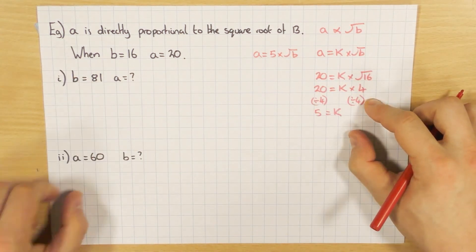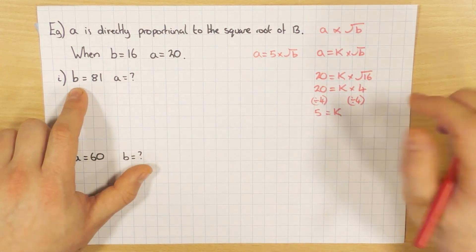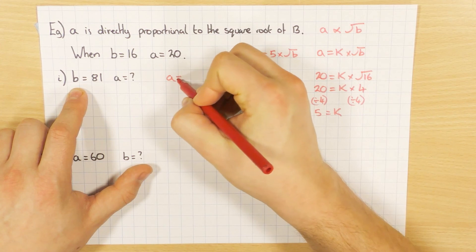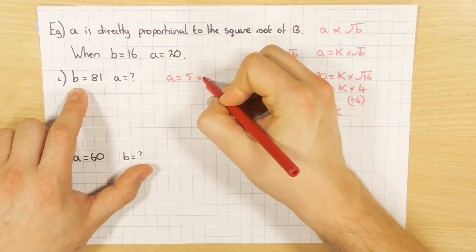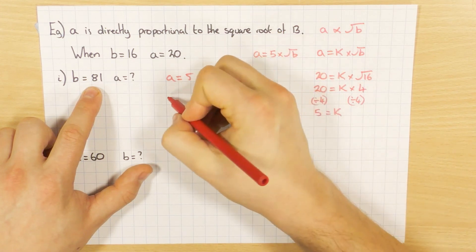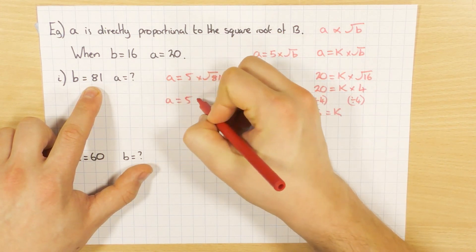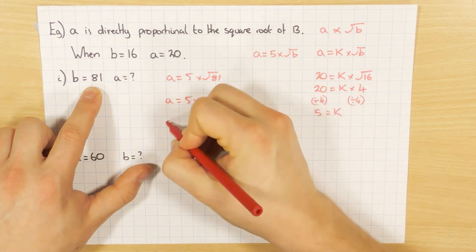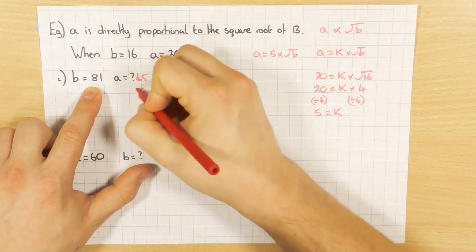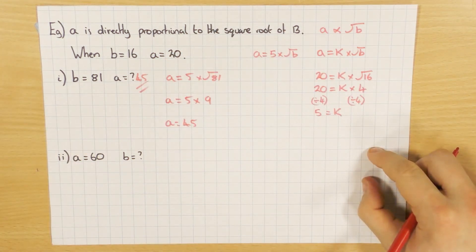And now I can work out these two questions. So if b is 81, then substitute it in. So a equals 5 times the square root of b. And b was 81. So a equals 5 times, well the square root of 81 is 9. So 5 times 9, 45. There we go. 45 happy days.